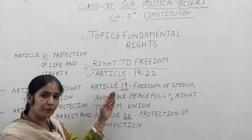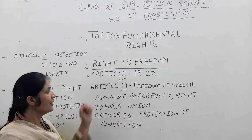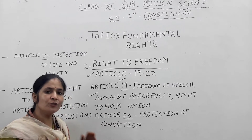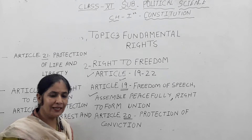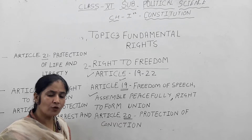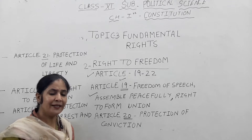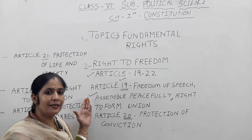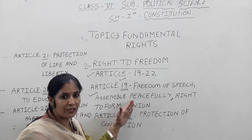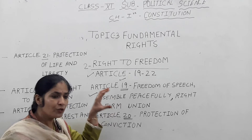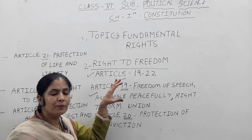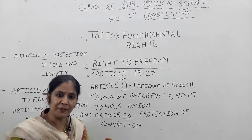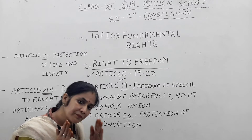The second freedom under article number 19 is the right to assemble peacefully. It means if you want to conduct a meeting in a society, you may do so in a peaceful manner. It should not harm the social order and should not harm the dignity of any person in society. You can assemble peacefully in a group of two or more people, but the meeting must be conducted in a very peaceful manner and must maintain the dignity and order of the society.